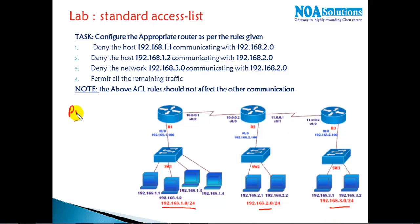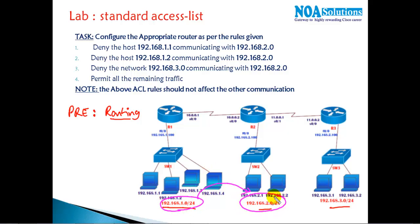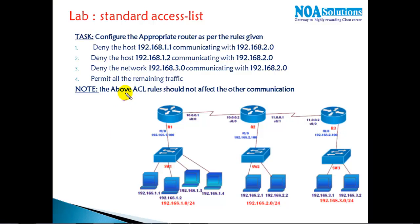The basic prerequisite for this lab is to have some routing configured — it can be RIP, EIGRP, or OSPF — just ensure that users on the 1.0 network can communicate with the 192.168.2.0 and 192.168.3.0 networks. All three LAN users should be able to ping each other; that is the basic prerequisite.